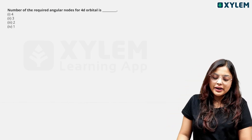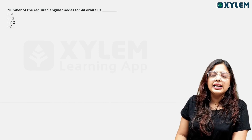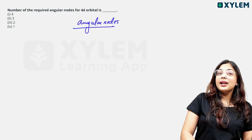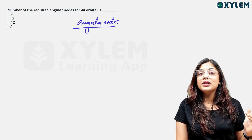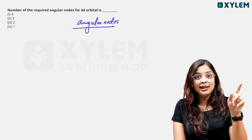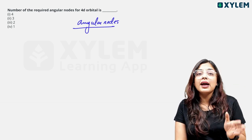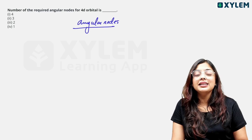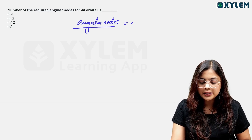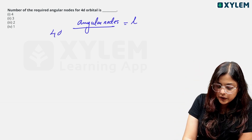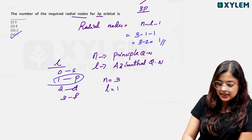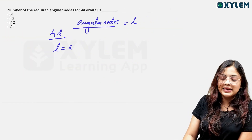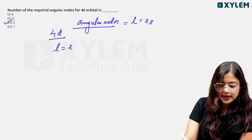The number of angular nodes for the 4d orbital: angular nodes equal the azimuthal quantum number, l. For the d subshell, l equals 2. So the number of angular nodes for the 4d orbital is 2. That is option 3, and that is the correct answer.